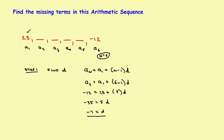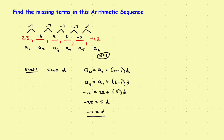Now we fill in the missing terms by subtracting 7 each time: 23, 16, 9, 2, −5, and finally −12. That checks out, so those are the missing terms in the sequence — just another variation on the problem.